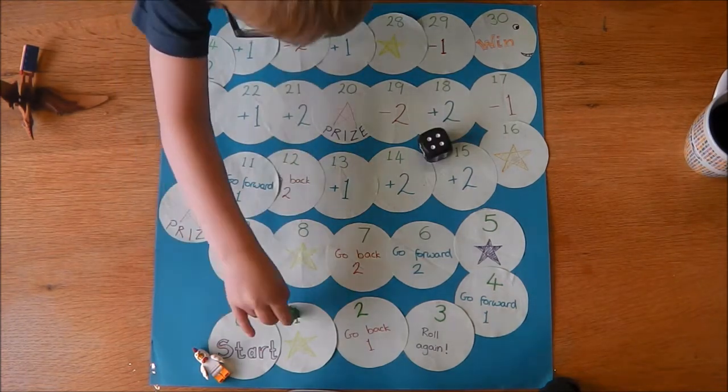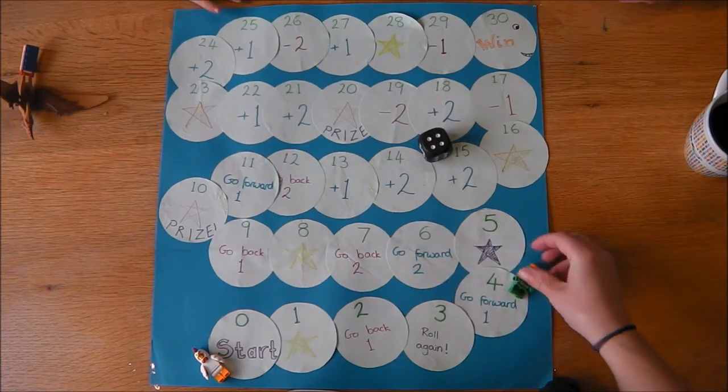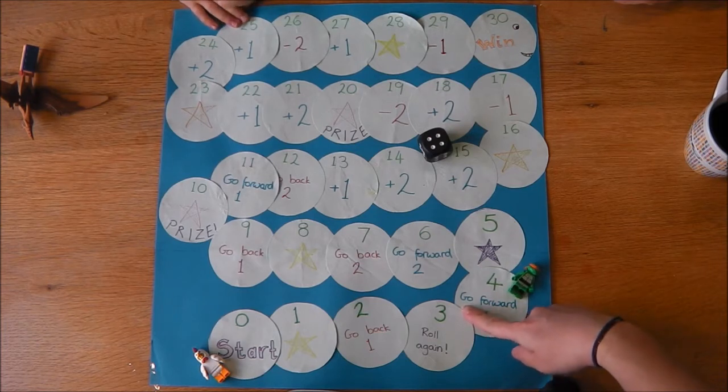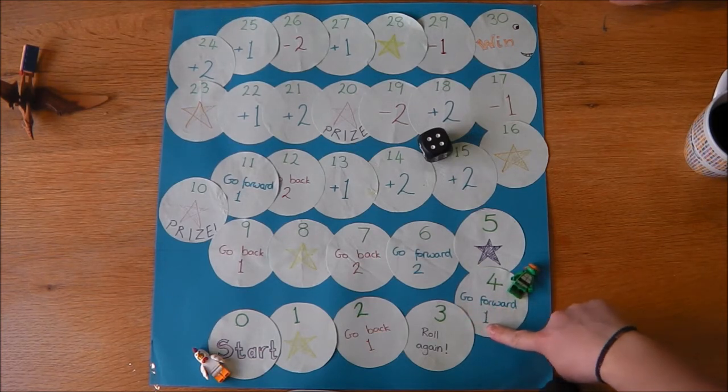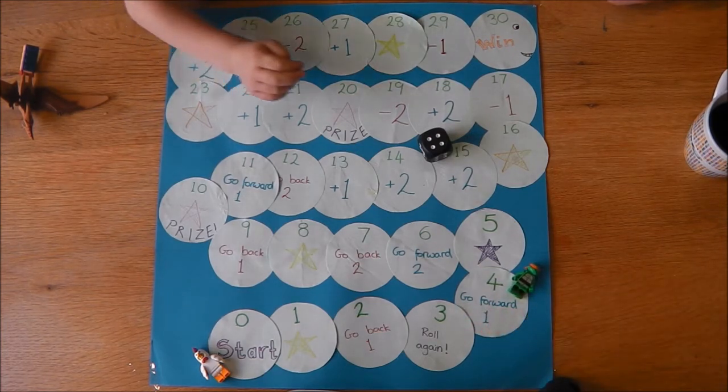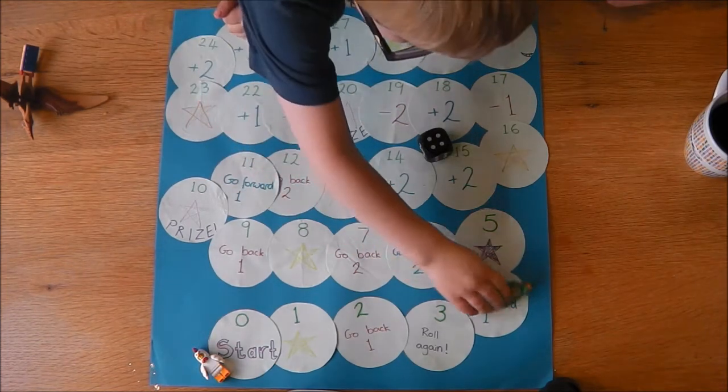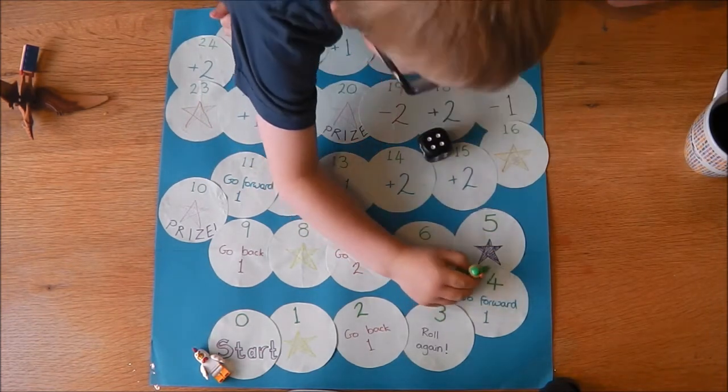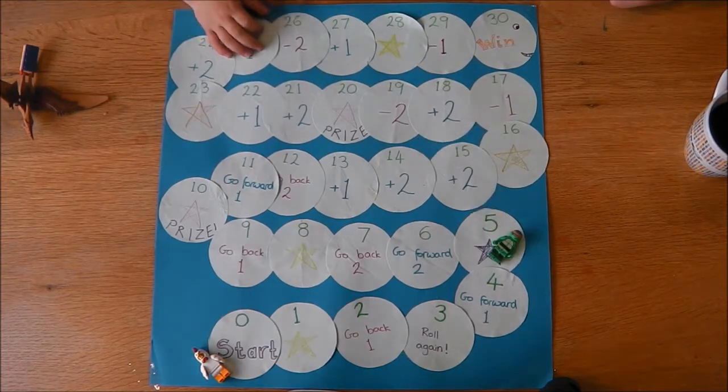4. Now this square says go forward 1. So you get to go forward 1 more. What number will you land on? 5. Good job.